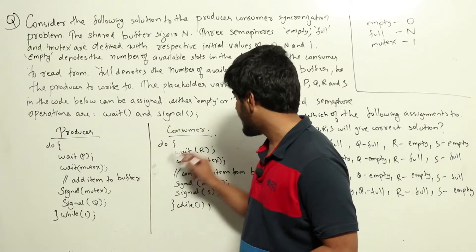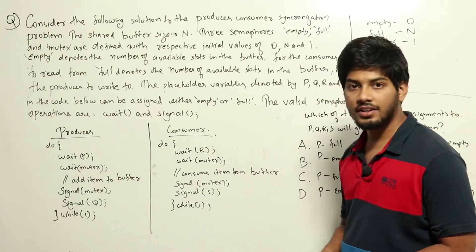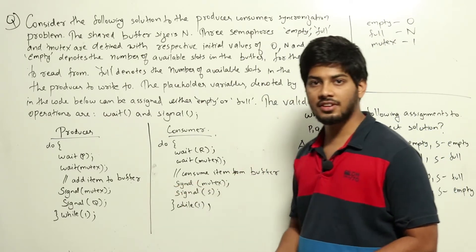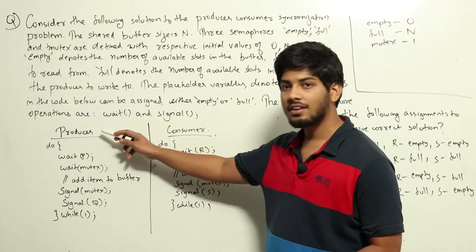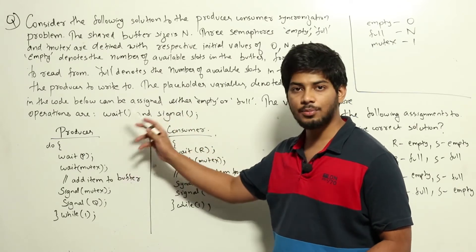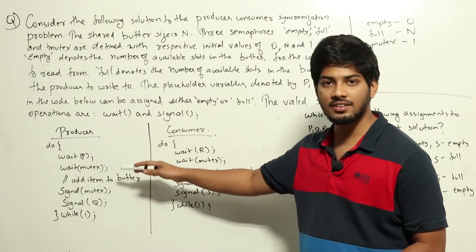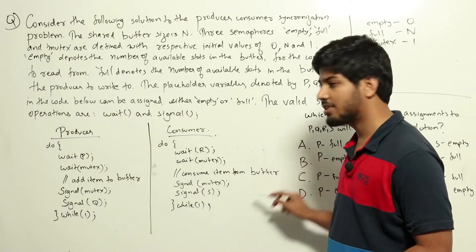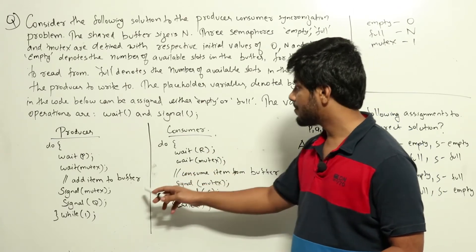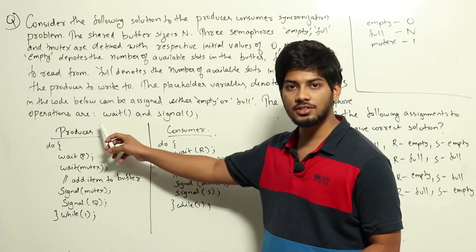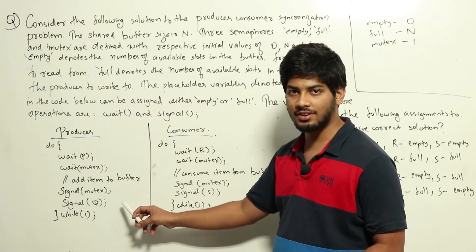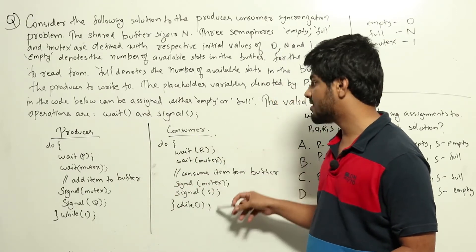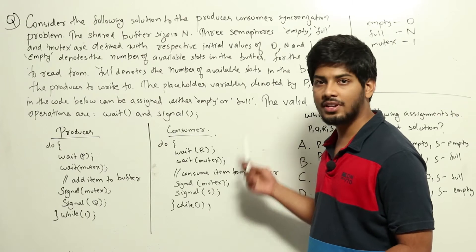This is the producer code and this is the consumer code. We need to ensure proper process synchronization such that the producer, once it has something, it will keep on adding to the buffer and whenever something is there in the buffer, the consumer should read from the buffer. If the buffer is full, the producer should not be able to add any more to the buffer. Similarly, if the buffer is empty, the consumer can't consume anything from the buffer.